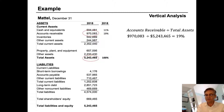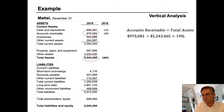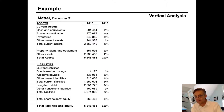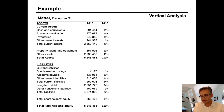Now you can stop the video here and try to calculate the percentages down this column for the rest of this balance sheet, and you can do the same for the balance sheet of the prior year. Here's what I got. Each line is calculated the same way by holding the base item constant and expressing each account as a percentage of the base.